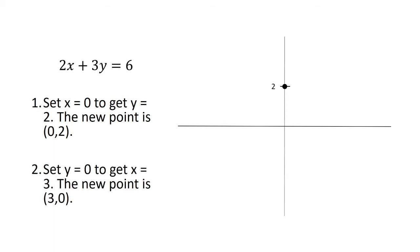Next we're going to set y equal to 0. So we have 2x equals 6, which means x is 3. So the new point is (3, 0). Lastly, we can connect these two points with the line, and that is our graph.